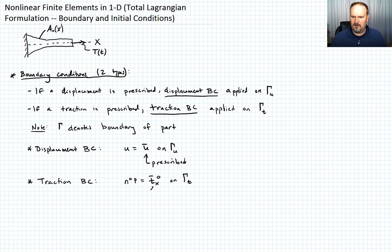For a traction boundary condition, we write n_naught · P = t_bar, the prescribed traction. What is n_naught? It's the unit normal of the surface where the traction is applied. In a 2D or 3D case, that's a dot product - a vector dotted with the stress tensor.